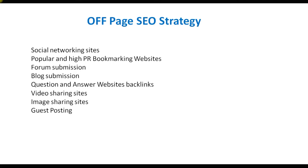First of all, we have to create accounts on social networking sites for the particular domain and company, and we will link to them. This is very common — we have to create Facebook accounts, link the page or profile, Twitter, LinkedIn, and YouTube. Apart from this, we have to regularly share the website URL on social media with some content, which will generate social links. This is part of off-page SEO.